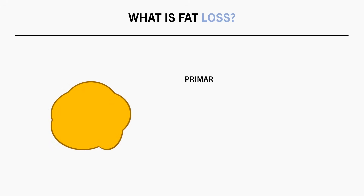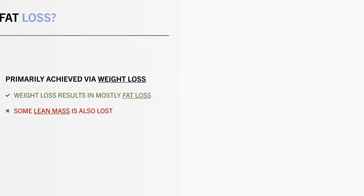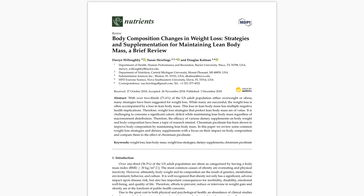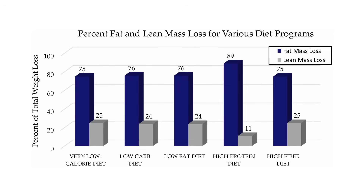Fat loss is achieved primarily via weight loss. When losing weight we lose mostly fat, however we also usually lose a little bit of lean mass in the process. This research review found that during weight loss people typically lose about three quarters fat and about one quarter lean mass when no specific strategies are implemented to retain lean mass. The exception to this is high protein diets, which we will discuss soon.